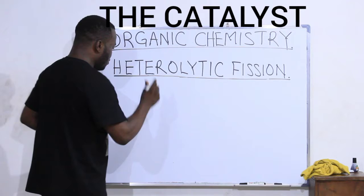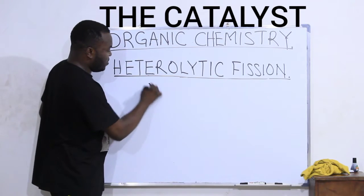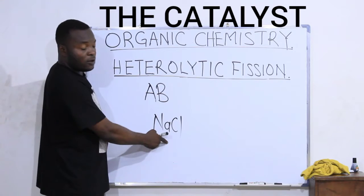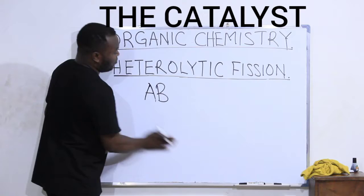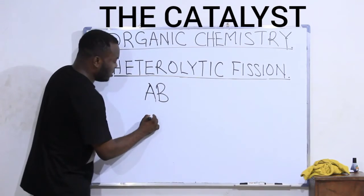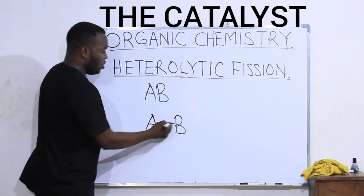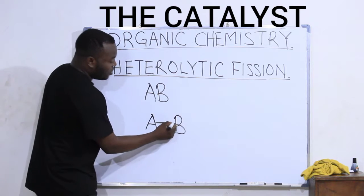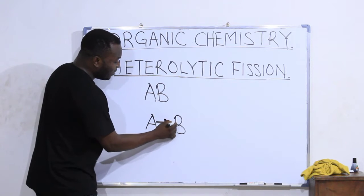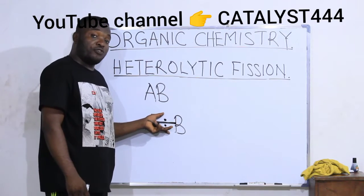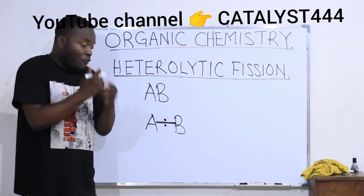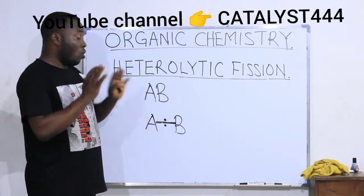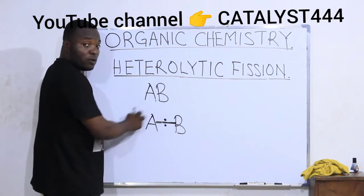If I have a substance like AB — a compound which is AB — remember this can be something like sodium chloride, where A is one atom and B is the other. There is a bond connecting them. In chemistry when we write the compound we don't show the bond, but bear in mind that there is a bond between the two atoms A and B. This bond contains two electrons, and these two electrons were contributed by A and B during the formation of the bond. We are dealing with covalent bonding — that is organic chemistry.